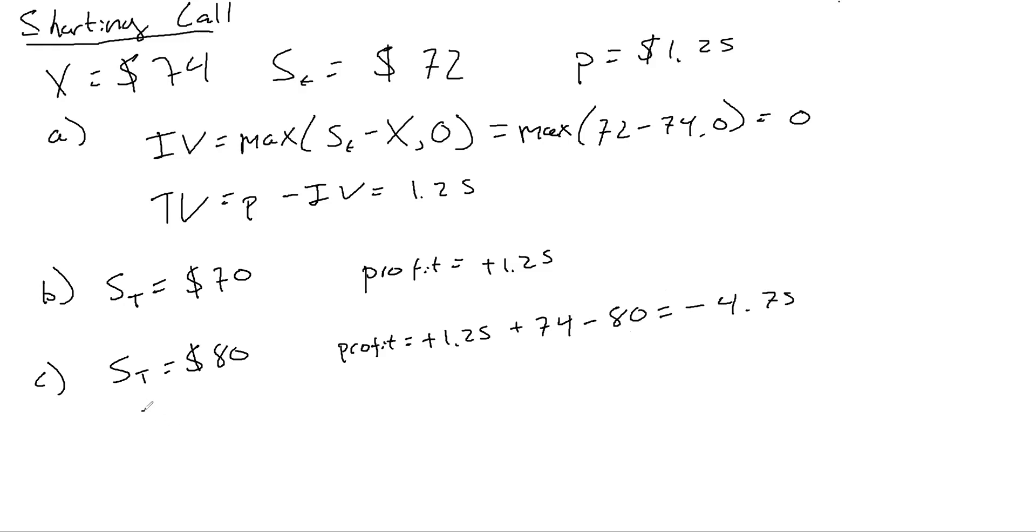So for a call option to pay off, remember this would be a profit, the x-axis is the stock price. If you short a call, you receive the premium. So in this case $1.25, and then the other party would exercise it at $74. And from there, it's 45 degrees going down and you lose a dollar for every increase in stock price.